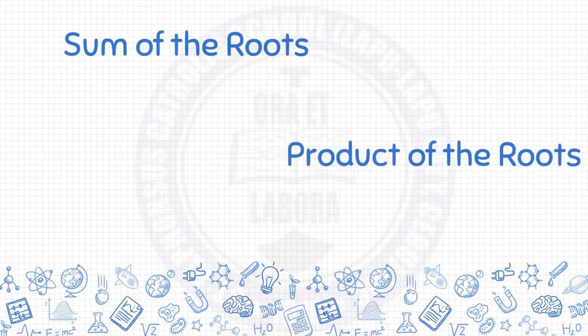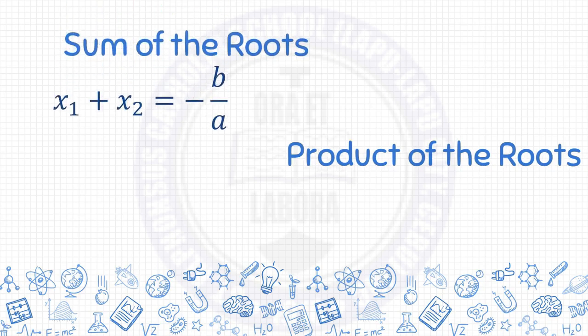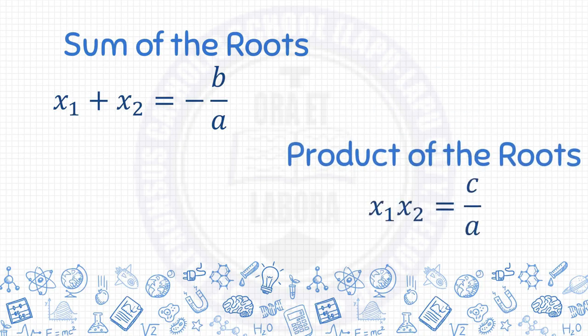For the sum of the roots, all we need to do is get the value of b and a and apply this formula: x₁ plus x₂ equals negative b over a. And for the product of the roots: x₁ times x₂ equals c over a.